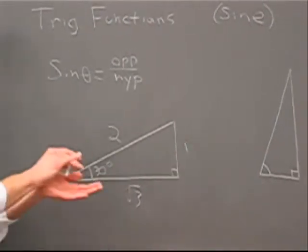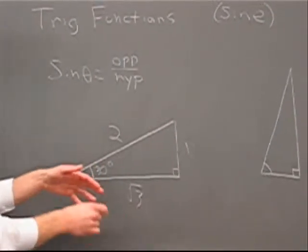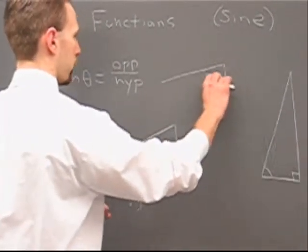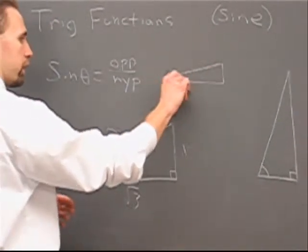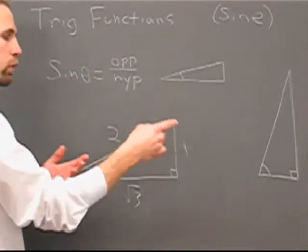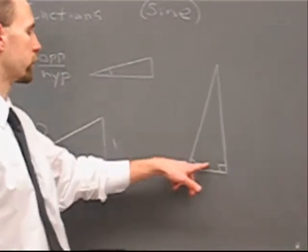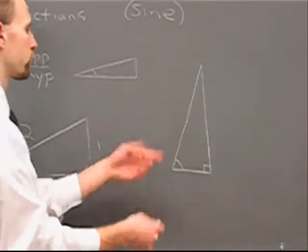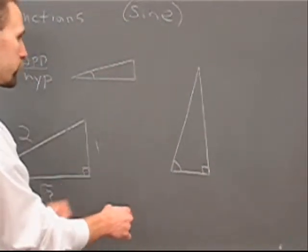You would expect that the sine of smaller angles should be small, because the ratio of the opposite side to the hypotenuse is small. And for larger triangles, you would expect the sine to be larger, because the ratio is a little bit larger.